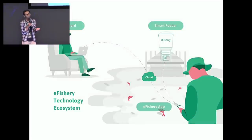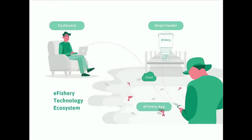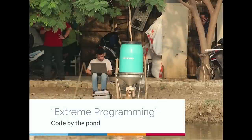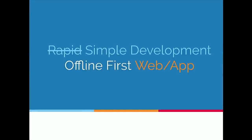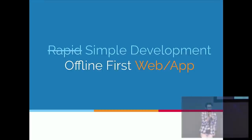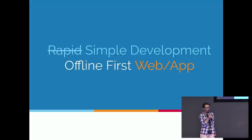So we built a product for this. I do some hardware, some software, some data, but most of the time I just talk with people. We are actually practicing extreme programming — literally extreme programming out by the pond. Anyway, I changed my talk title to 'simple development.' Rapid doesn't really mean simple, but simple can help us be rapid. And it was kind of an absurd title: offline first web.